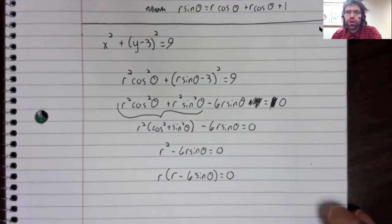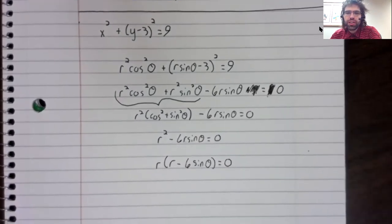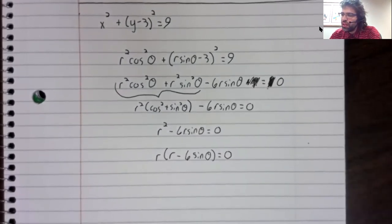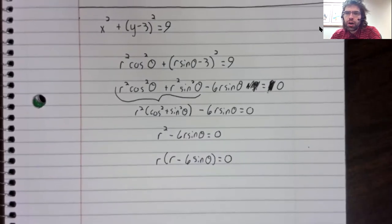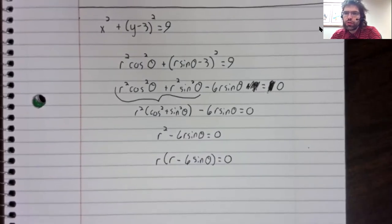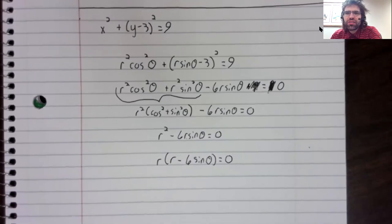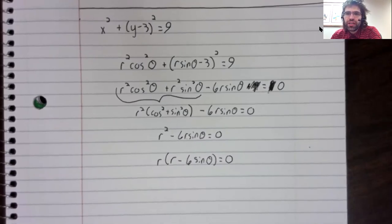And then the zero product property says that either r equals zero. Well, that's just the origin, a single point.